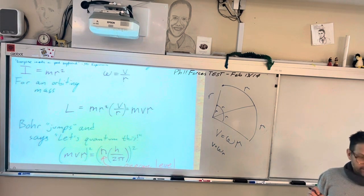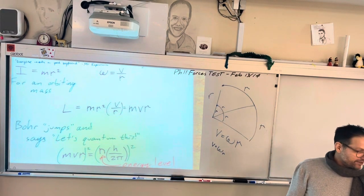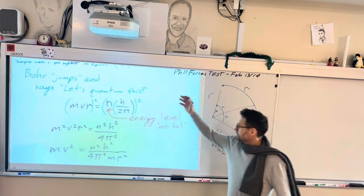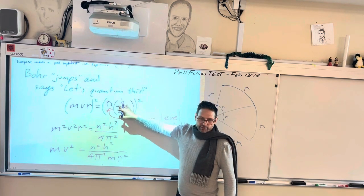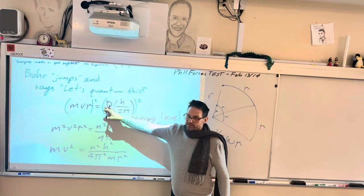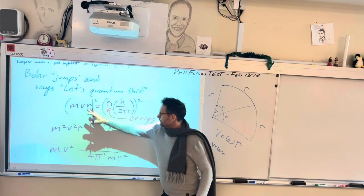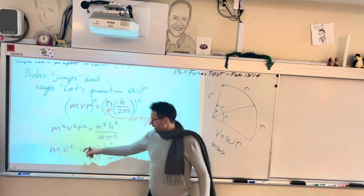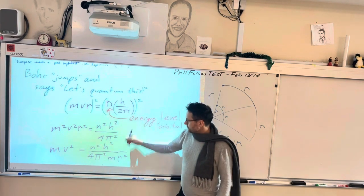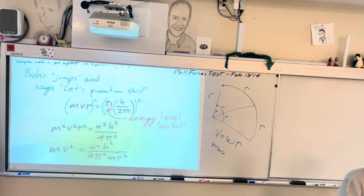And then he goes, bam, let's do something crazy. And let's quantum this. And he says, let's just make it nh over 2 pi. Because h is Planck's constant. And that's quantum. And the universe is quantum. So maybe it'll work. And 2 pi is circles. And n is the energy level of the atom. And so if we work through that, he just decides to square both sides. Because he's trying to get to mv squared. Because we know what mv squared is.